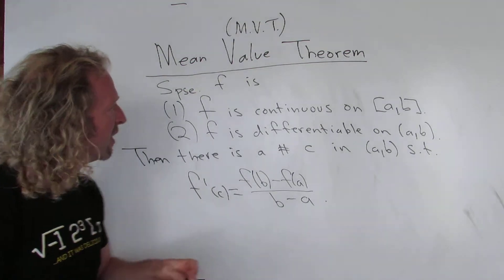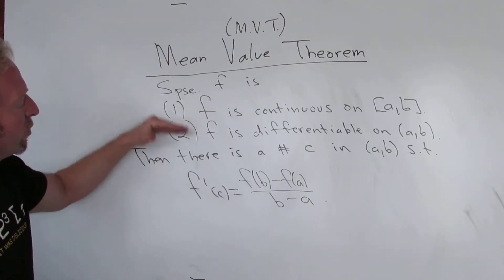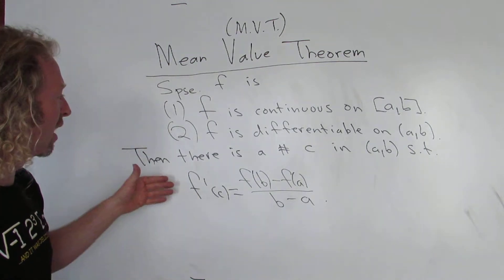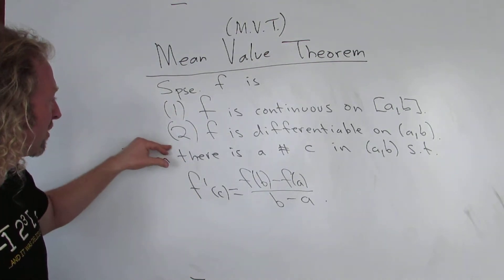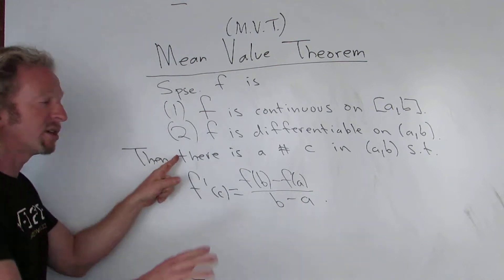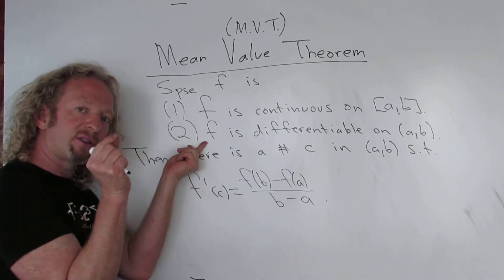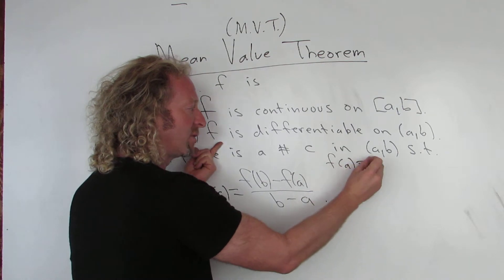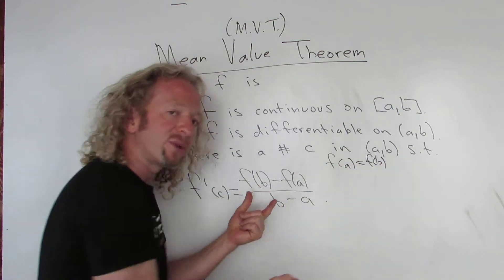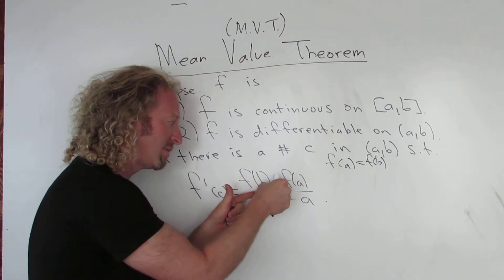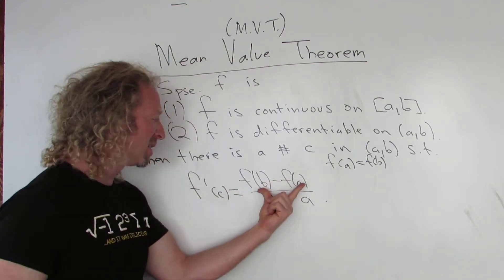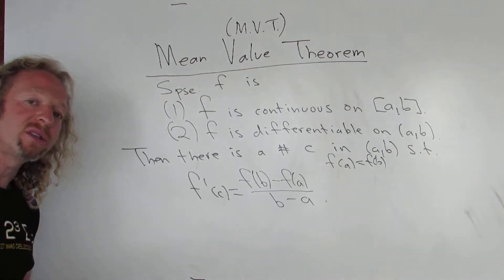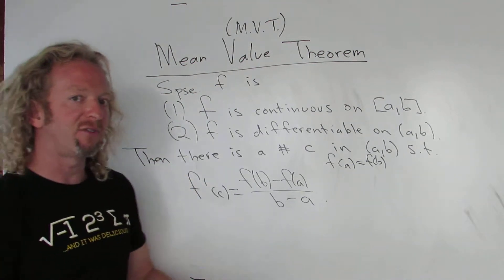So the mean value theorem's first two conditions are pretty much identical to Rolle's theorem, but the conclusion is different — we're missing the third condition from Rolle's. If we had that third condition from Rolle's, where F of A equals F of B, then F of B minus F of A would be zero, which is exactly the statement of Rolle's theorem. So Rolle's theorem is a special case of the mean value theorem. However, in order to prove the mean value theorem, you have to use Rolle's.